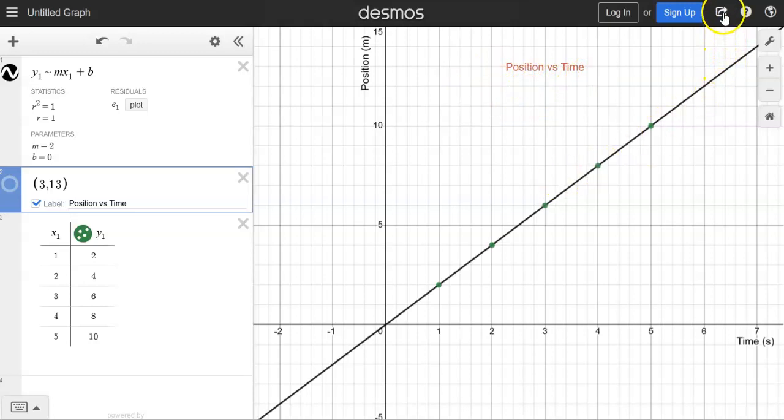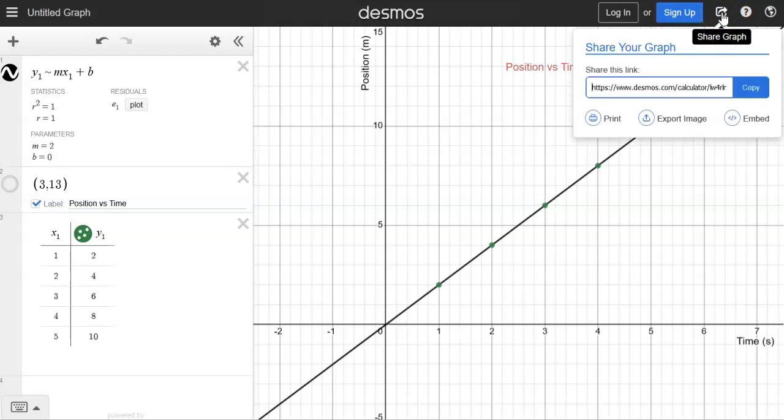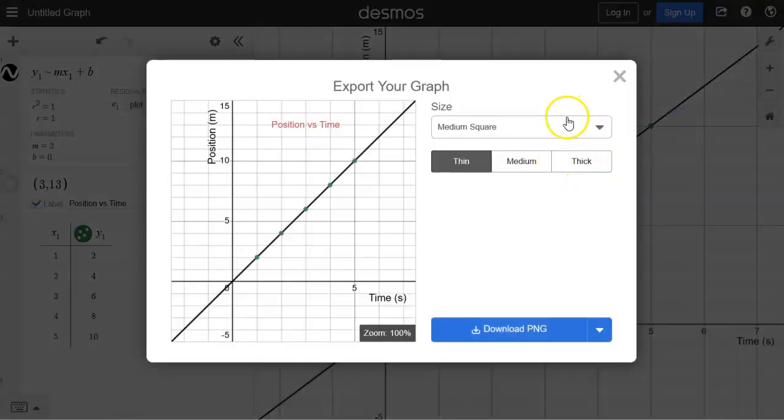Also, if you ever want to share your graph, you can go ahead and click on this share graph icon. It's on the top right-hand corner, and then when you come here, you can go ahead and copy that link. You can export the image, and if you click on the export image down here, click on the download PNG, and then that will download it onto your computer.